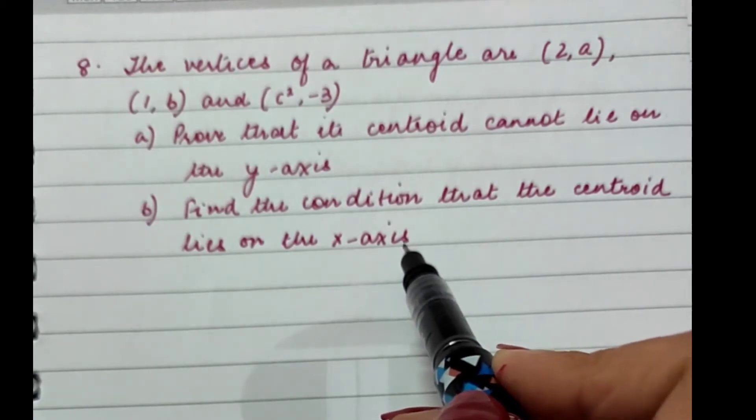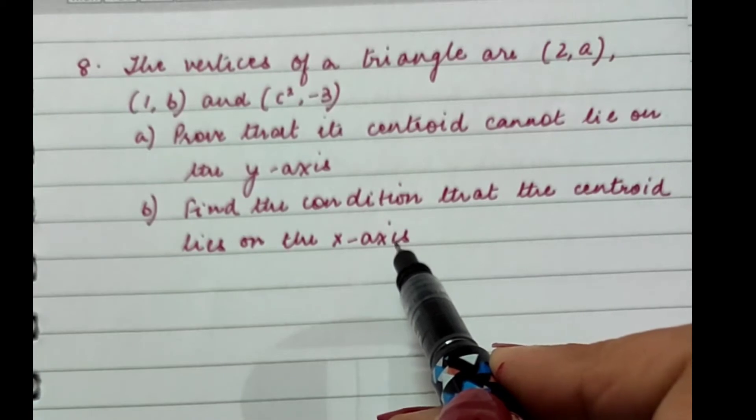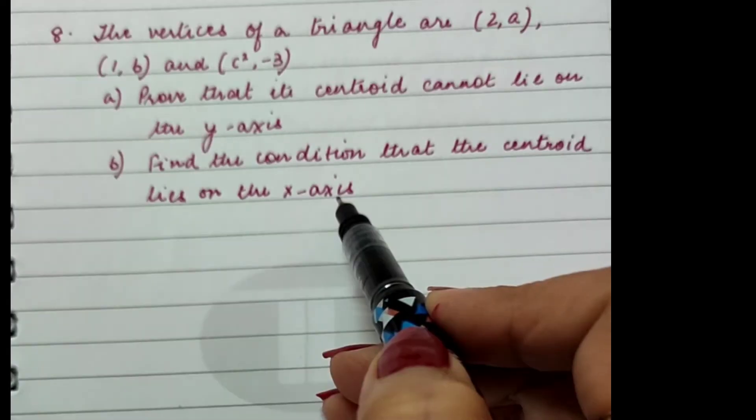You all remember what are the coordinates of the centroid for a triangle. If the triangle has vertices (x1, y1), (x2, y2), and (x3, y3), then the centroid is given by (x1 + x2 + x3)/3 and (y1 + y2 + y3)/3.